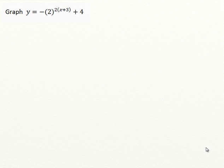The first example is going to demonstrate exponential growth, and the second will be focused on exponential decay. So let's take a quick look at this first function. The first thing we'll notice is that we've got a base of 2, meaning the original parent function was just y equals 2 to the exponent x before all of these various transformations were applied.